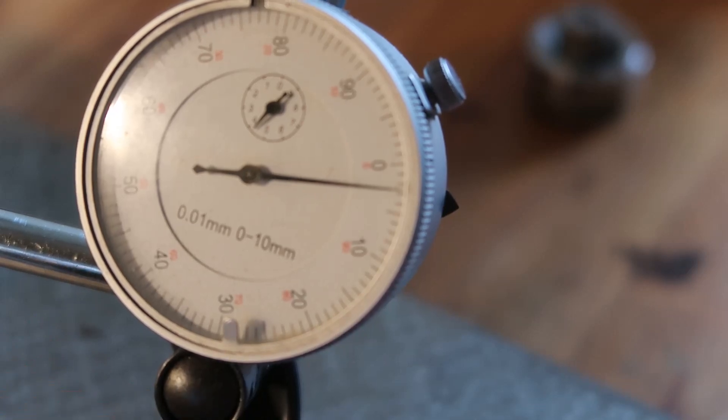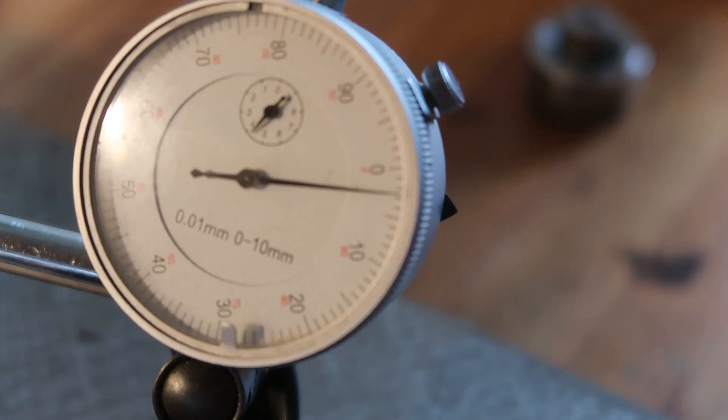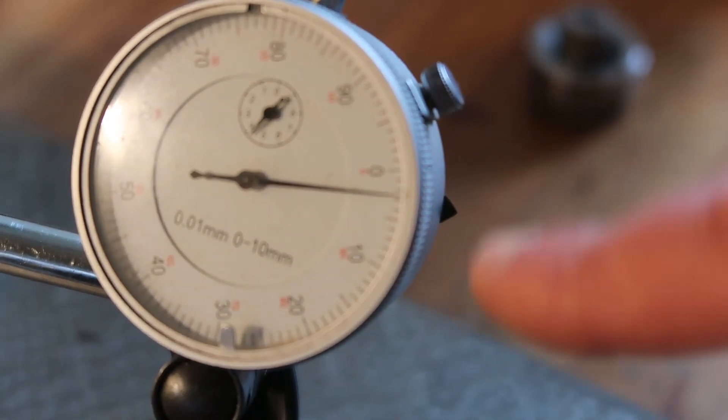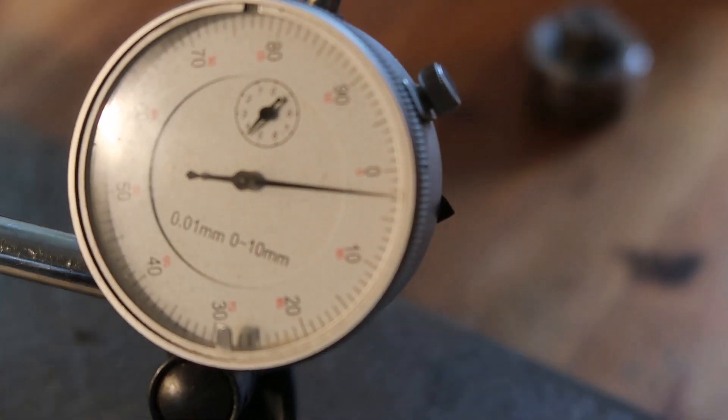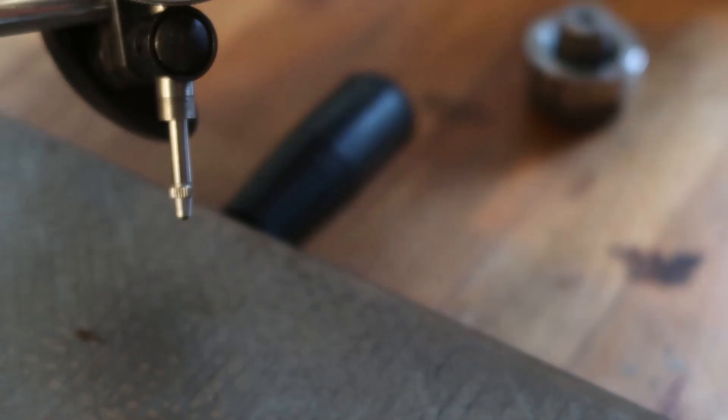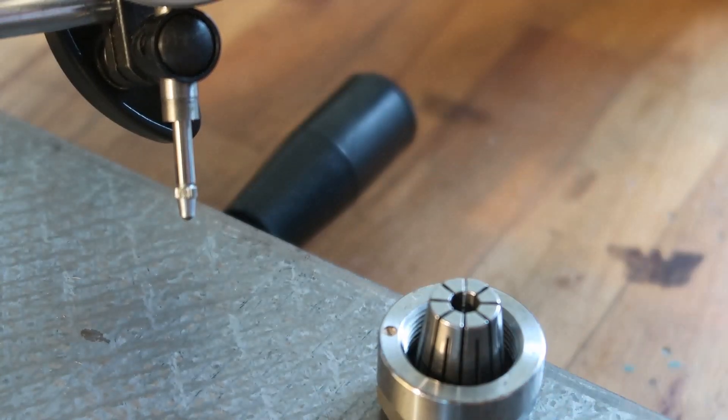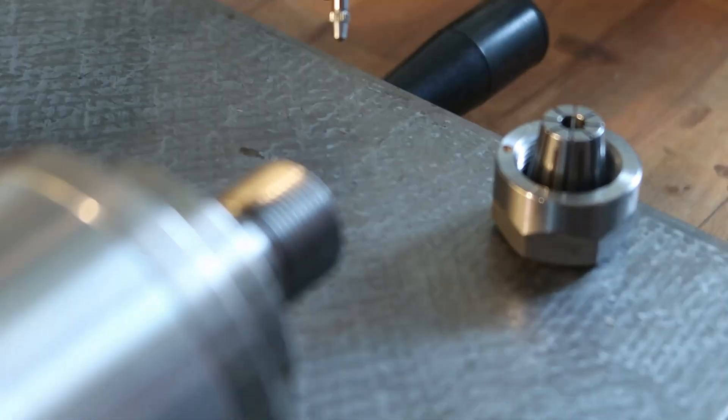So it is moving, but hardly anything. So I believe, according to this, the spindle nose has even less than five micron, because it's not even moving like half of one of those stripes. Now the problem I'm having, and I'm not sure, maybe I'm measuring it wrong, if I attach a collet with a cutter, and I'll use a cutter of a good brand.